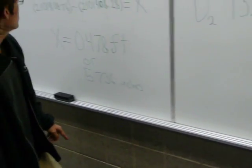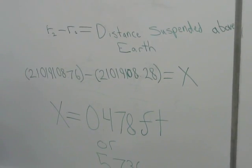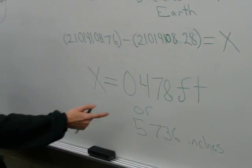Then, I took those radii, creating the equation of R2 minus R1 equals the distance suspended above Earth, which I labeled X.